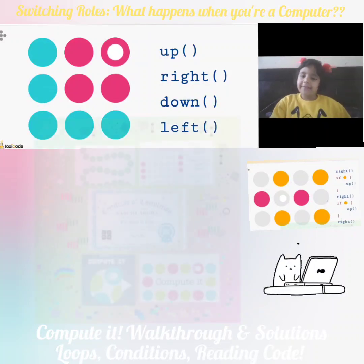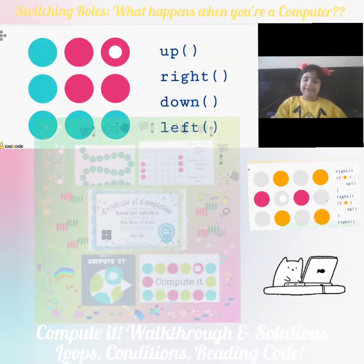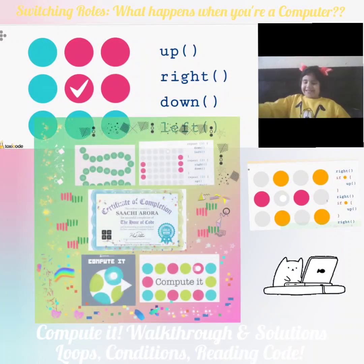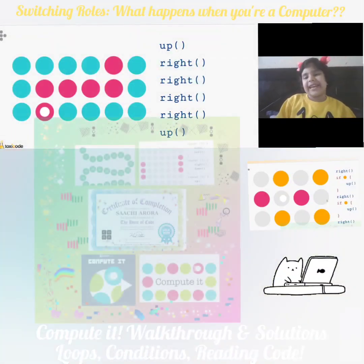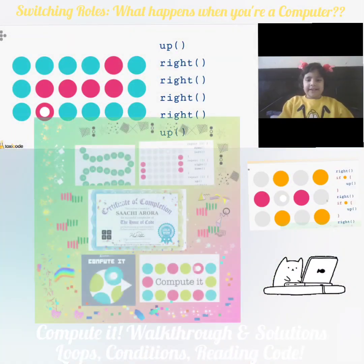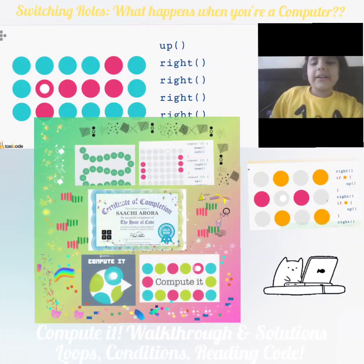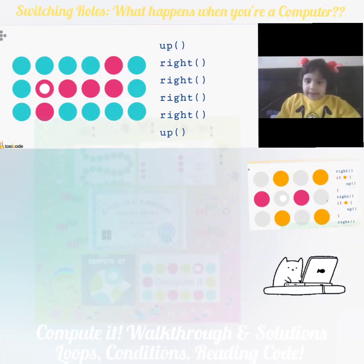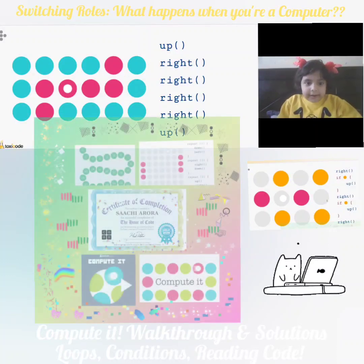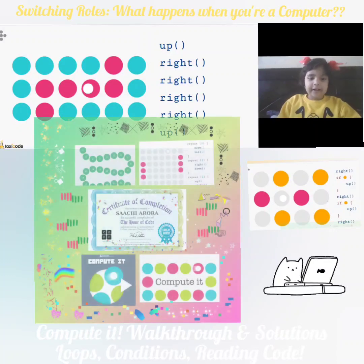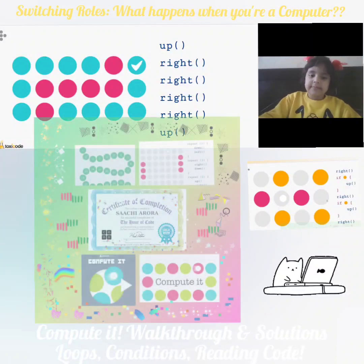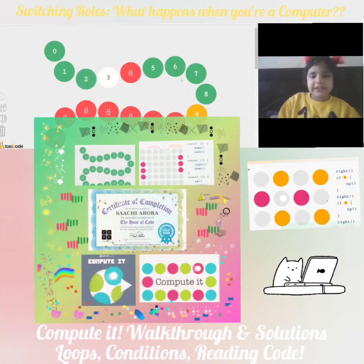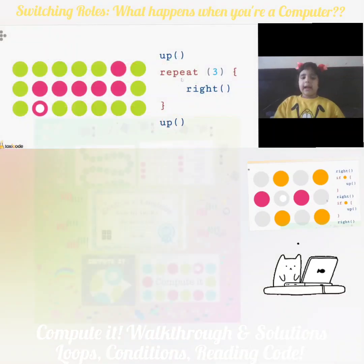Up, right. I've already done up and right. Now down and left. I'm using my arrow keys for this one. We are going up and going four times right. Let's count: one, two, three, four. And up. And now left, to reach the pink. Last pink dot.